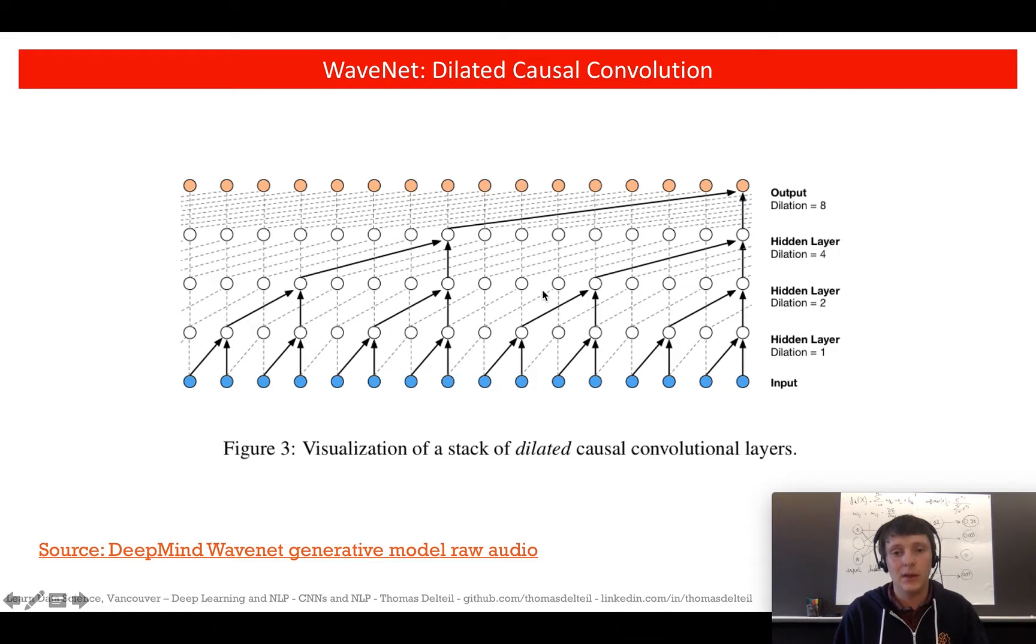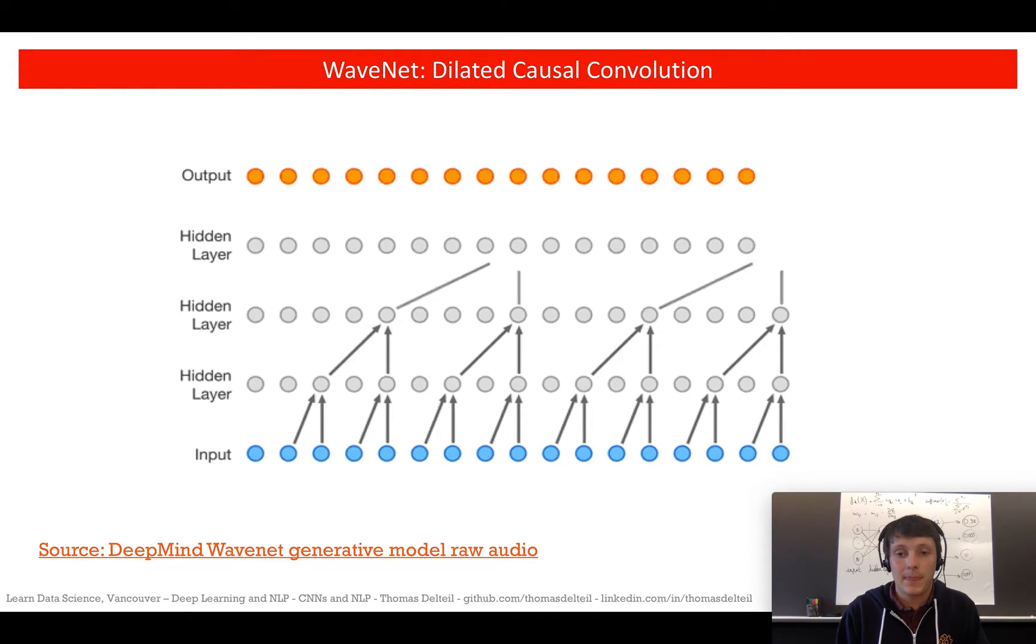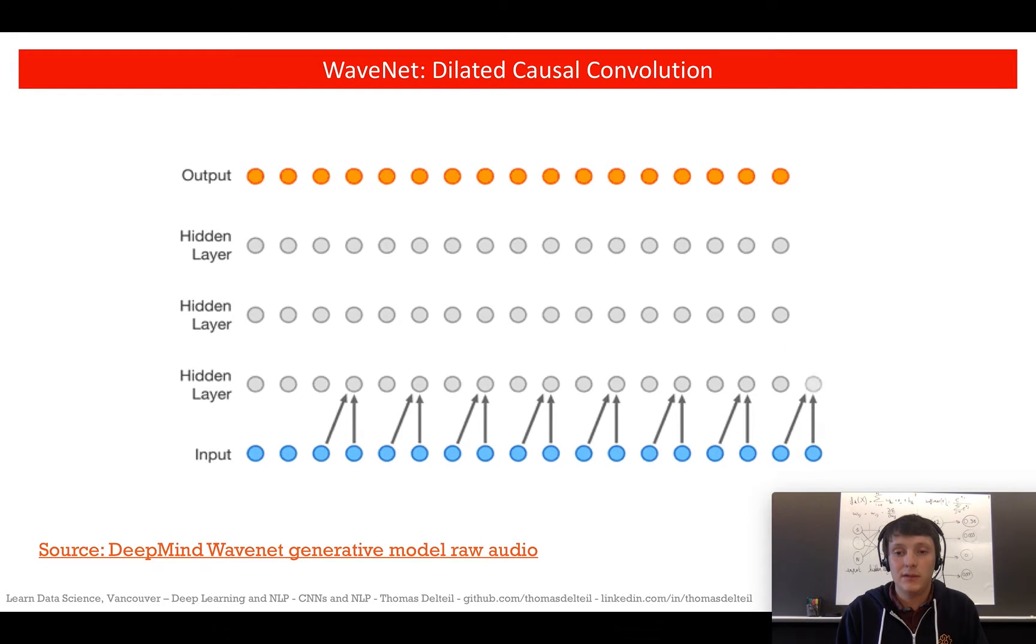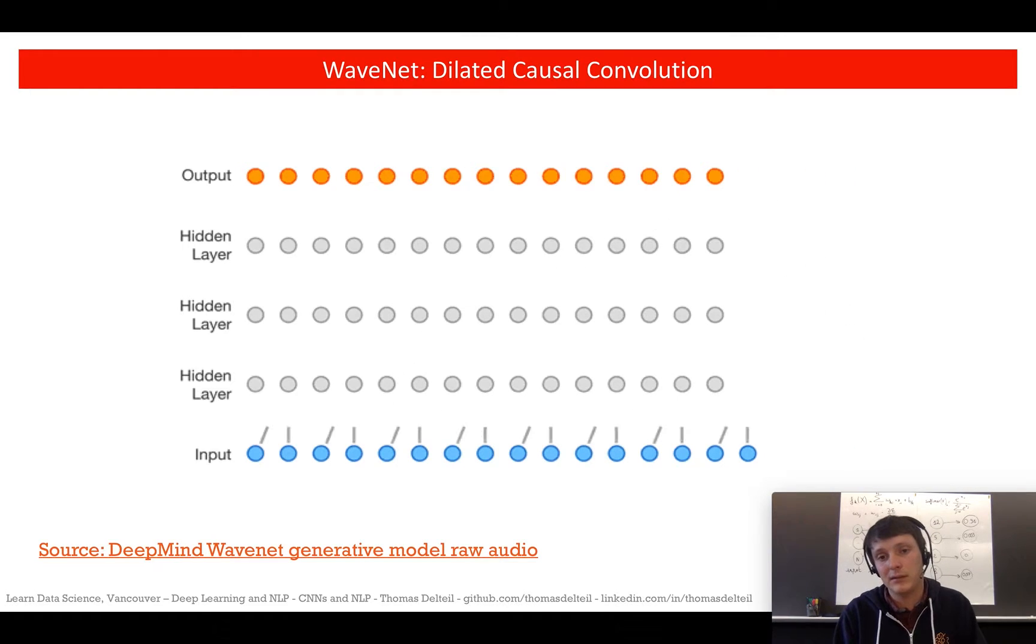This is especially important because the samples are at 30,000 hertz, which is 30,000 samples per second. Here you see how it works in auto-regressive fashion—the previous input is used to create the next output, and then it's added to the input.